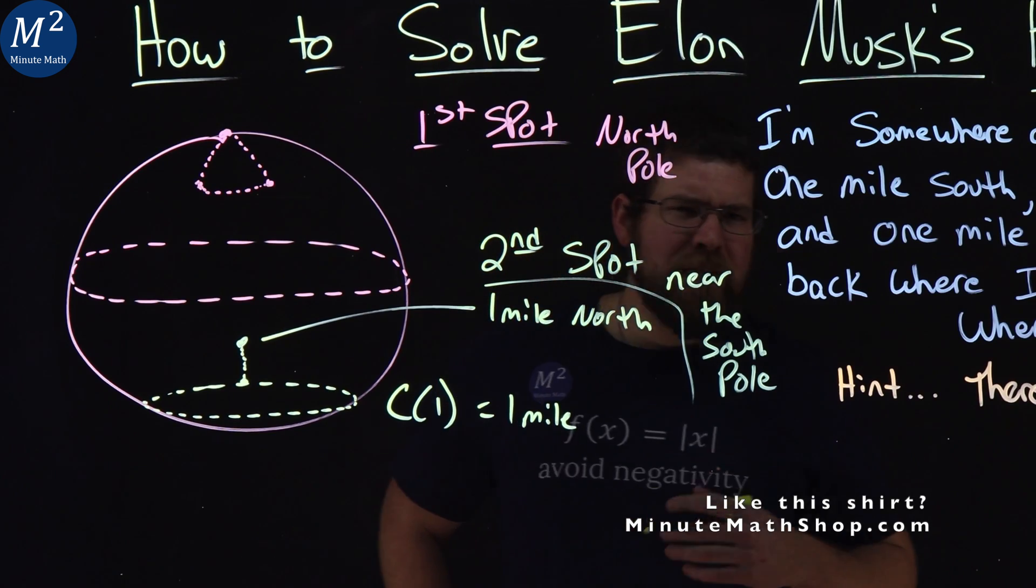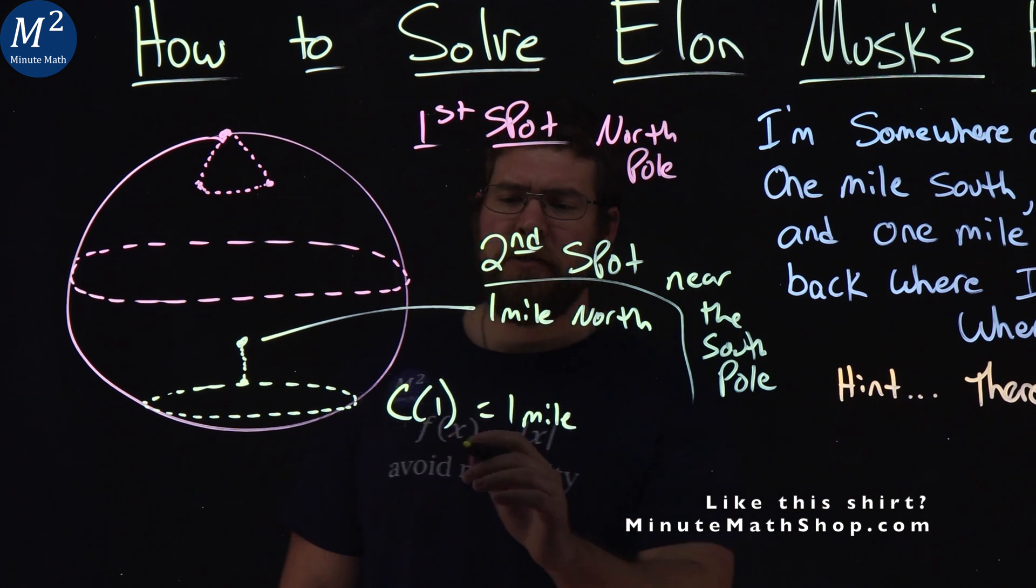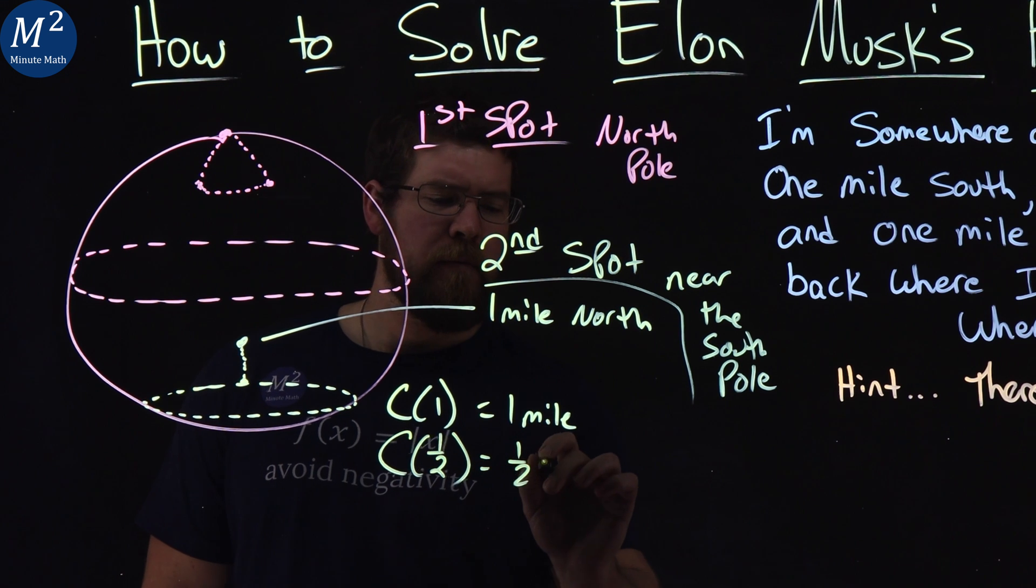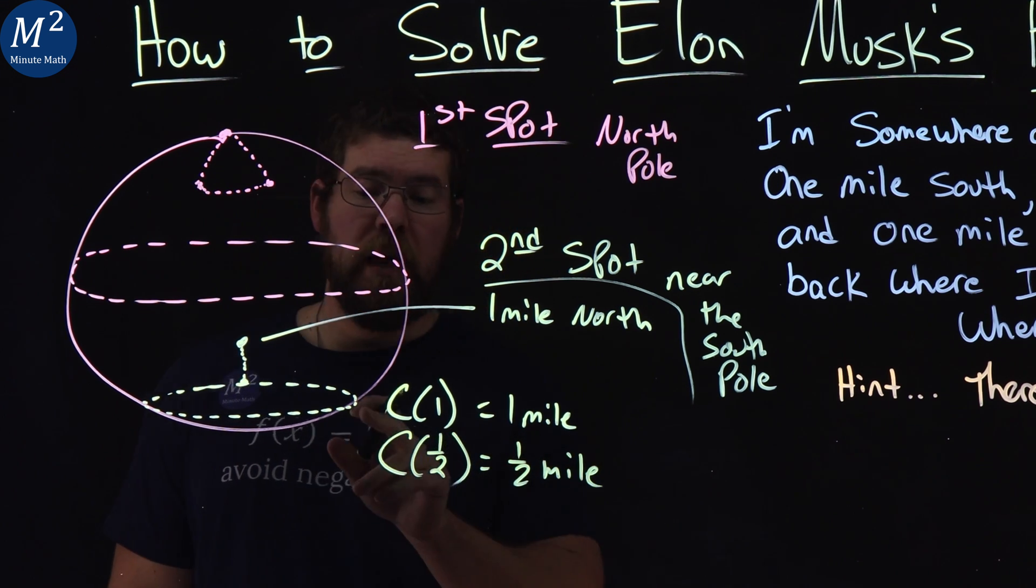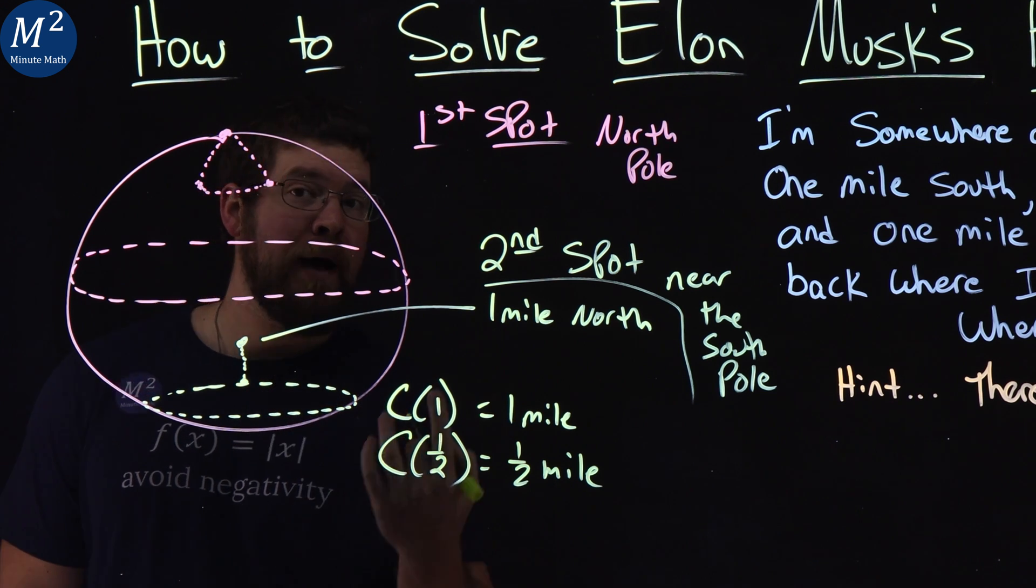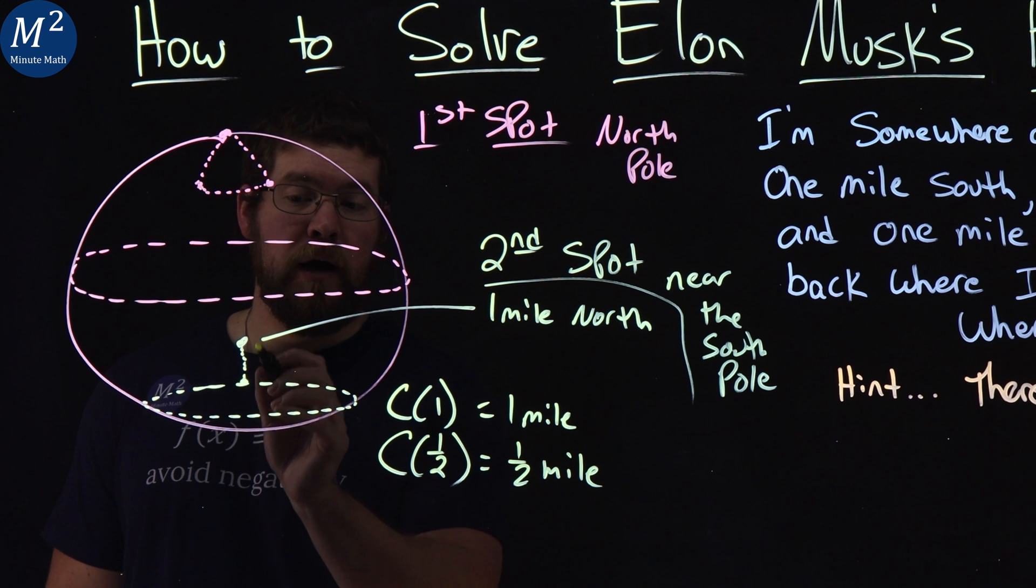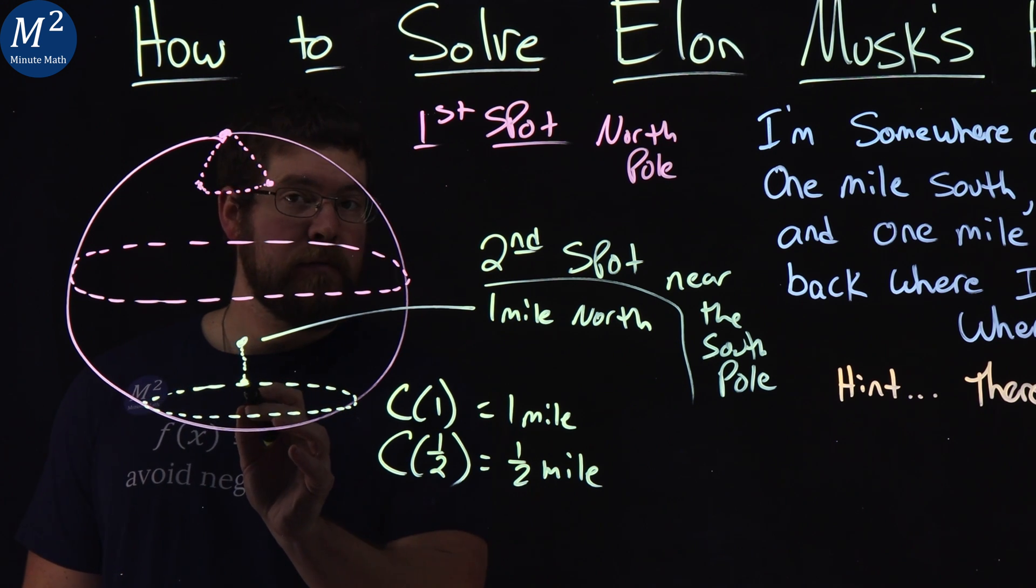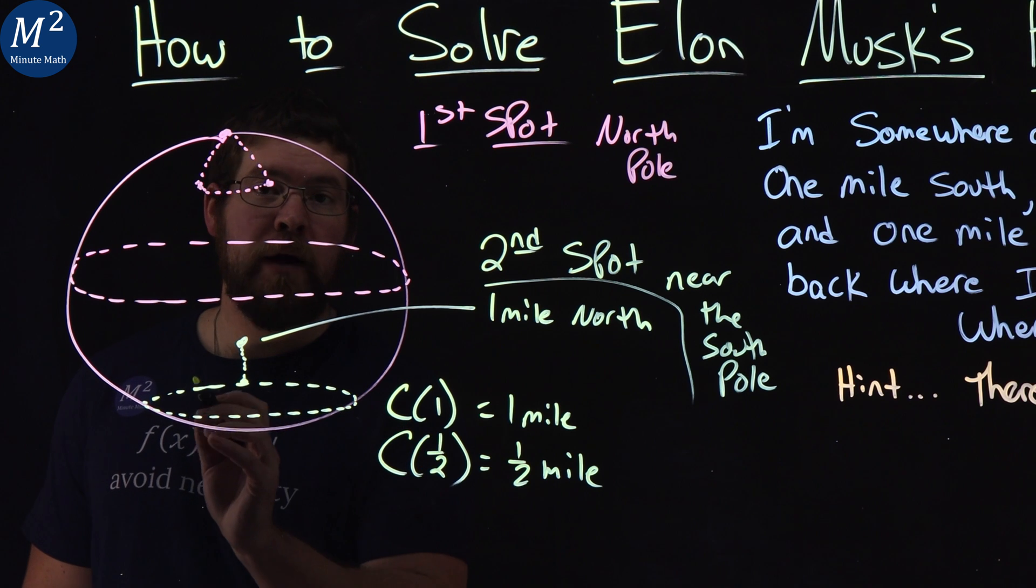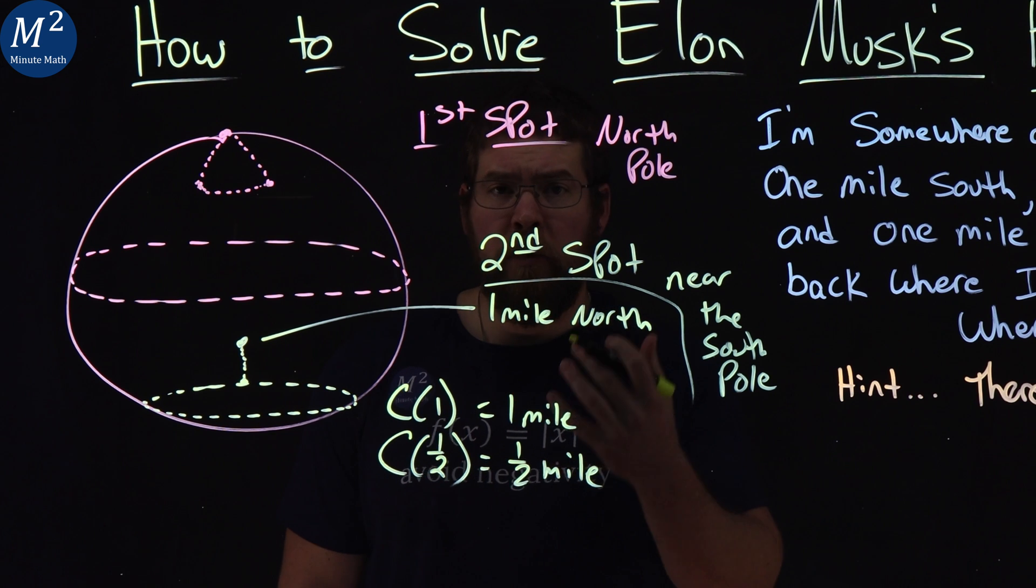Now there's even more answers to this problem here. What if our circumference was one half of a mile? Same idea would apply. So imagine this is just one half of a mile. If we start at a point one mile north of that circumference being one half mile, we would go down one mile, hit any point on the line, then we would do two laps around, then come back up north. And that also will work.